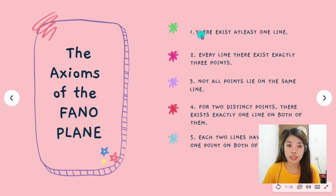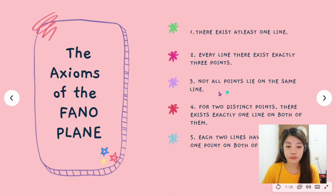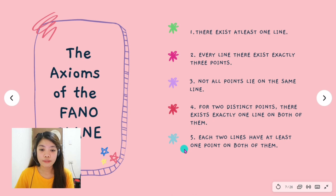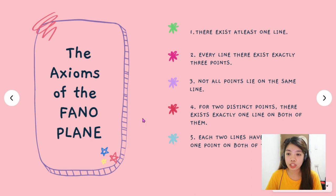The five axioms of the Fano Plane are: 1. There exists at least one line. 2. Every line has exactly 3 points. 3. Not all points lie on the same line. 4. For 2 distinct points there exists exactly 1 line on both of them. 5. Each 2 lines have at least 1 point on both of them.